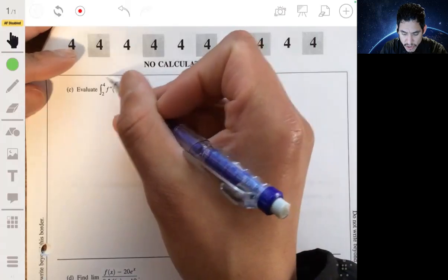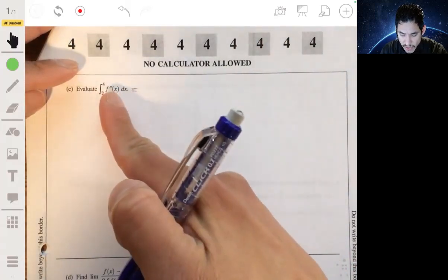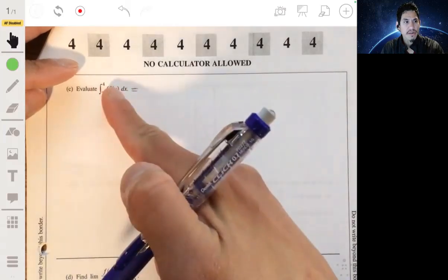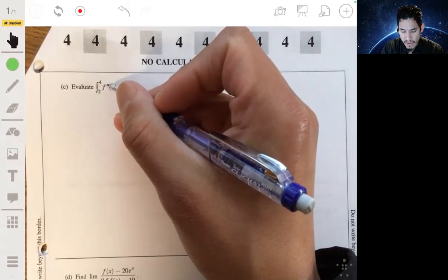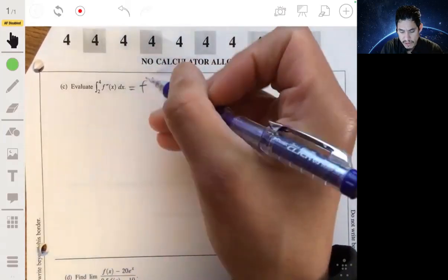And remember, when we integrate, what we do is we evaluate the antiderivative of the integrand at these points. Antiderivative of f double prime is just f prime.